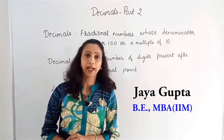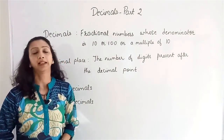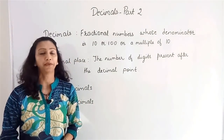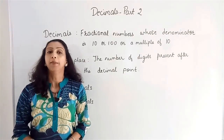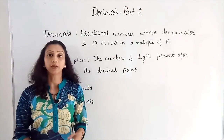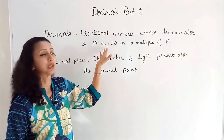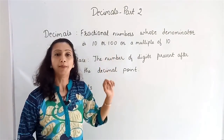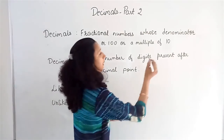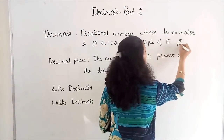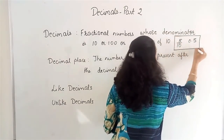A quick recap: decimals are fractional numbers whose denominators are either 10, 100, or any multiple of 10. For example, 5 by 10, 6 by 100, or 81 by 1000. We represent 5 by 10 as 0.5. This is how we represent decimal numbers.